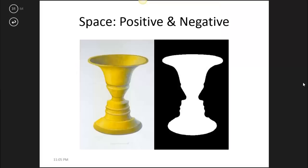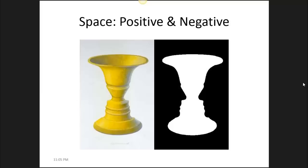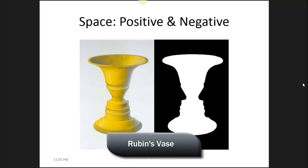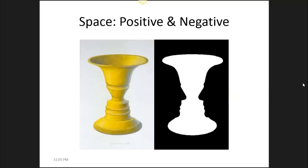With positive and negative space, basically positive space is the thing — the object. For example, this yellow vase. You are positive space as you stand in a room. Negative space is all the space around the object — so it is the space around the vase, or the space around you as you stand in that room. What's interesting about negative space is it too can have shape and meaning. For example, in this vase illustration called Ruben's vase, you'll notice that there are two profiles on either side of the vase's contours. The negative space is making a shape.